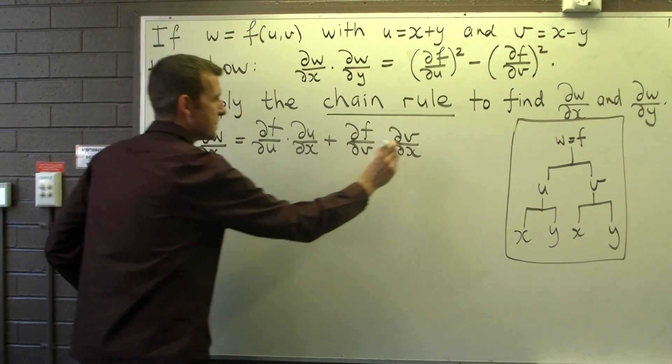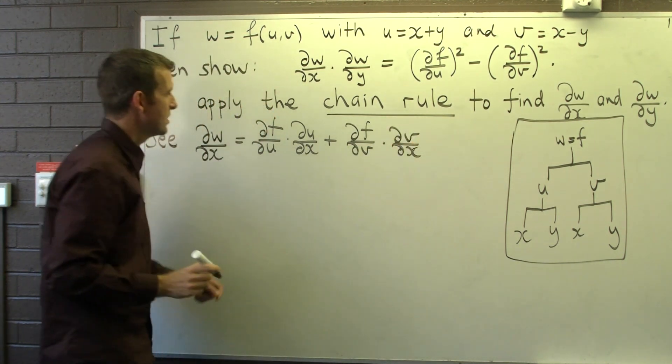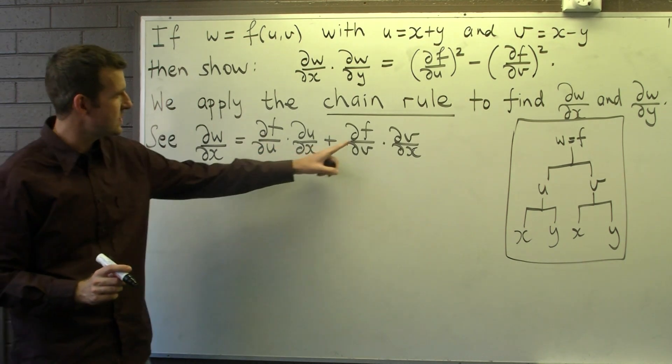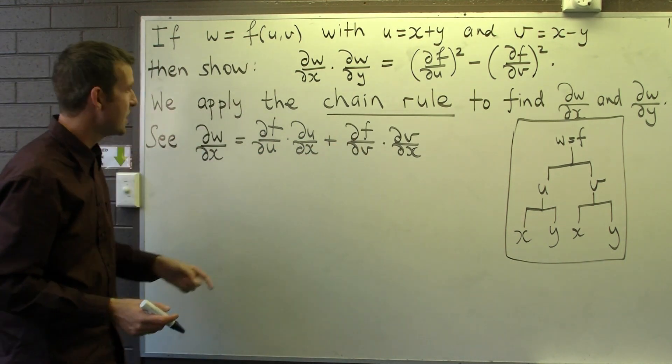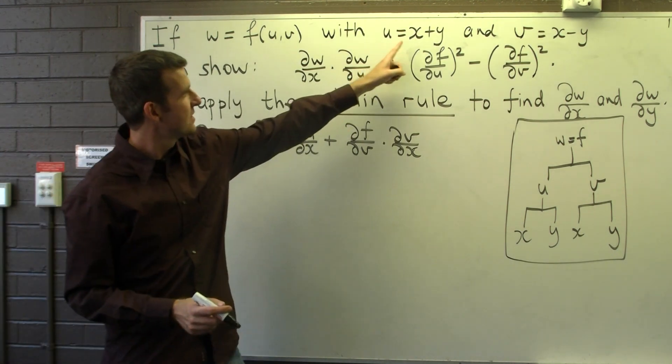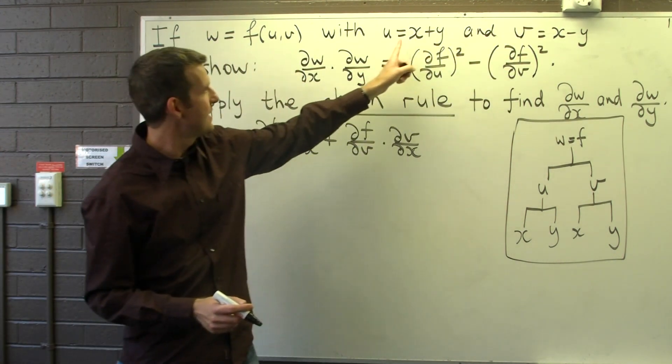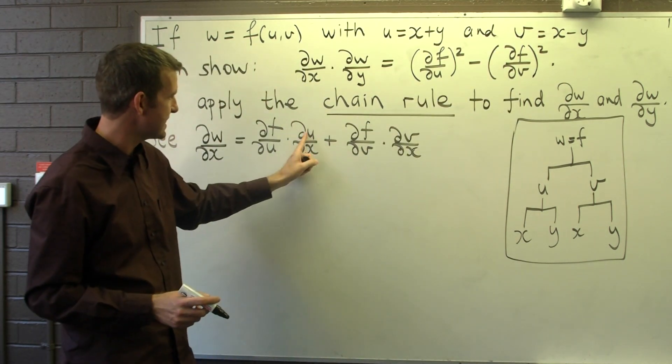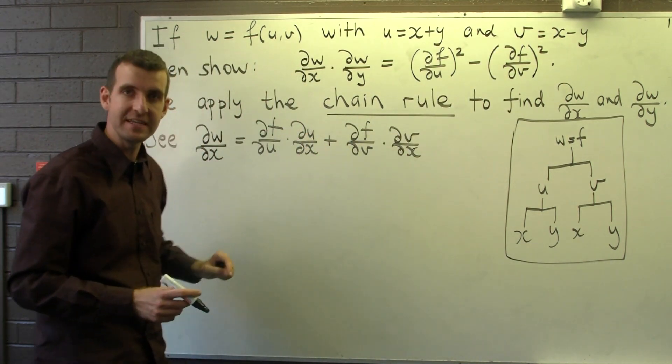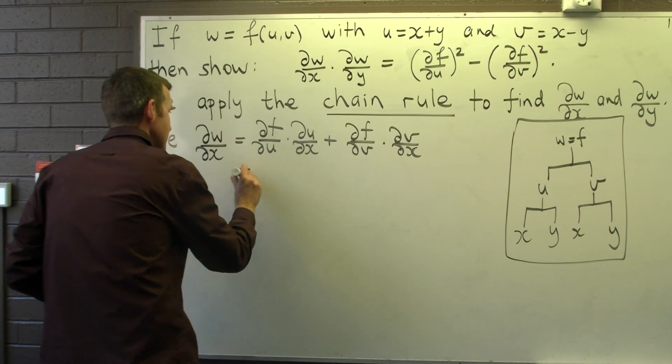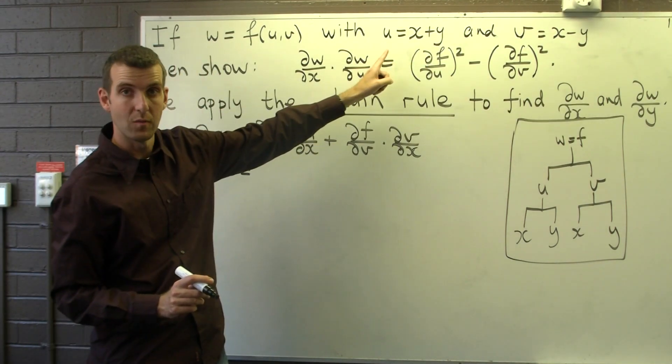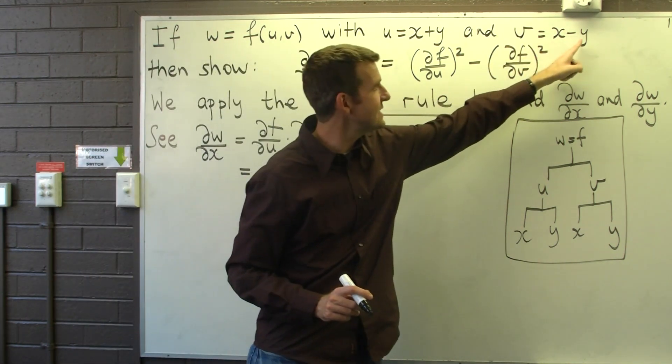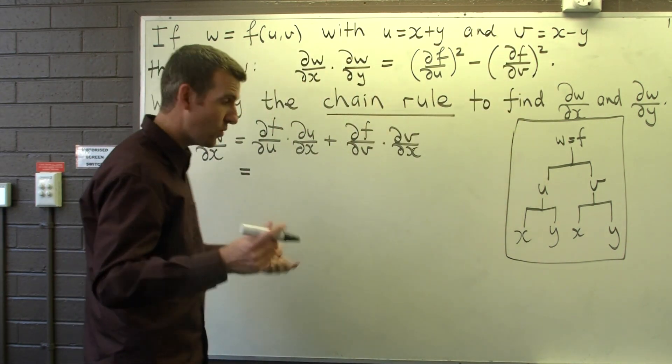Okay, well we're not sure what ∂f/∂u and ∂f/∂v are because f isn't specified, but we do know the particular format of u and v. So we can calculate ∂u/∂x and ∂v/∂x. So ∂u/∂x is just going to be one. ∂v/∂x is just going to also be one. So our ∂w/∂x now simplifies to this expression. Let's go through it and find ∂w/∂y.